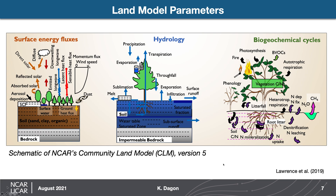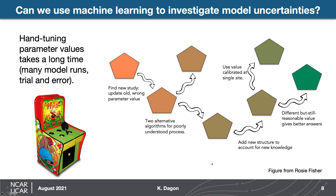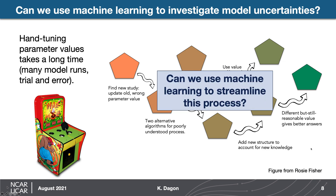There is uncertainty on the exact values used for some of these parameters. When we try to understand the uncertainty from those parameter values and adjust the model to better represent those processes, it can be a very complicated process. It takes a long time, a lot of model runs, and a lot of trial and error — it almost turns into a game of whack-a-mole, where fixing one parameter makes something else worse. The motivation for this project was: can we use machine learning to streamline parameter calibration and uncertainty quantification in the land model?